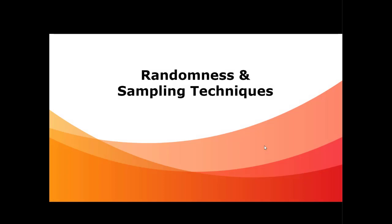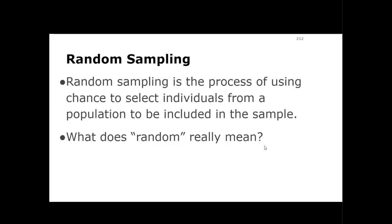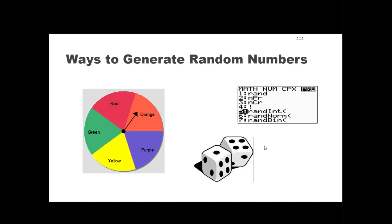Another way to decrease error is by increasing randomness and making sure you're choosing the right sampling techniques. Random sampling is the process of using chance to select individuals from the population to be included in the sample. You have to make sure you're using the right population and taking your sample from people who actually meet the characteristics relevant to the question you want to answer.